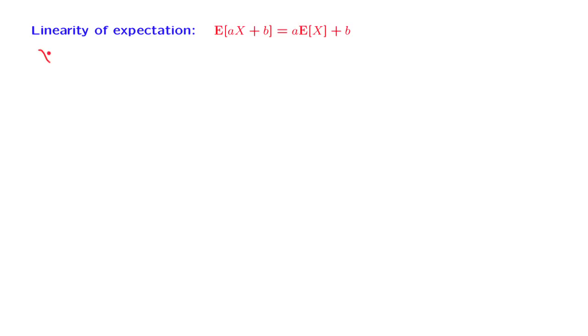Suppose that our random variable X is the salary of a random person out of some population, so that we can think of the expected value of X as the average salary within that population. And now suppose that everyone gets a raise, and Y is the new salary. And generously, the new salary is twice the old salary, plus a bonus of $100.